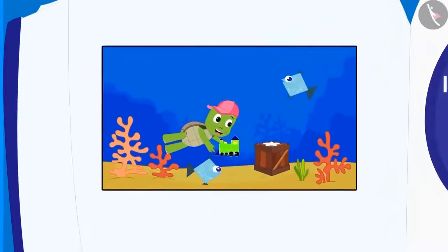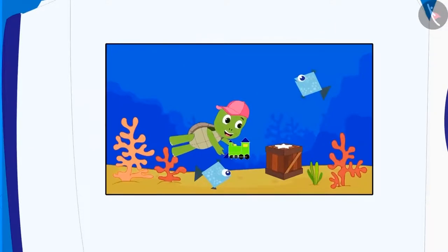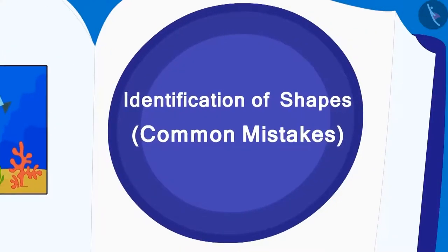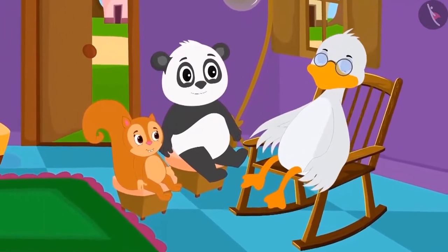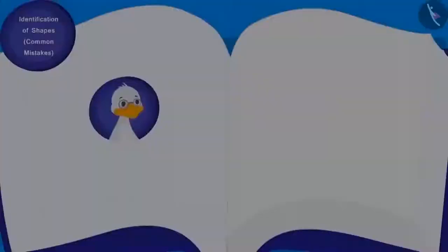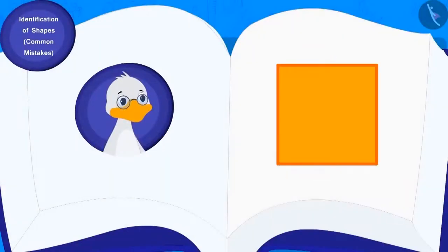We saw some interesting examples of identifying different shapes in the previous lesson. In this lesson, we will see some common mistakes related to it. Today, at Chacha's house, Chanda and Golu are playing a unique game. Chacha will show them a shape and they will have to tell the name of that shape. Chacha will give a toffee to the one who recognizes the shape correctly.